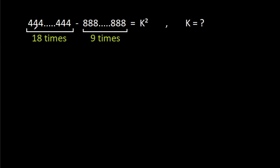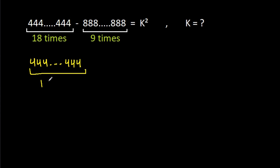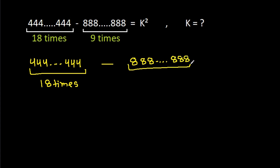In this video, we have been given 4 written 18 times minus 8 written 9 times is equal to k squared. Then we have to find the value of k. So, we have 4 written 18 times minus 8 written 9 times is equal to k squared.